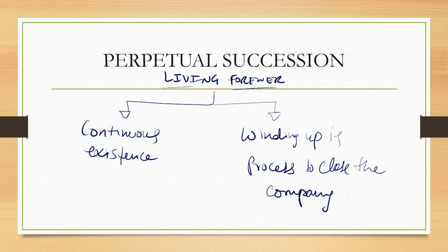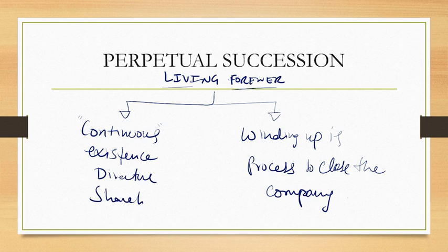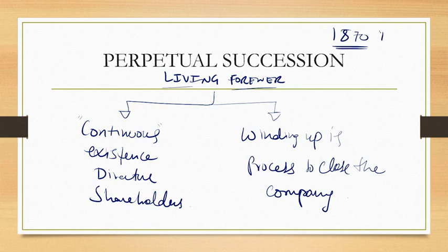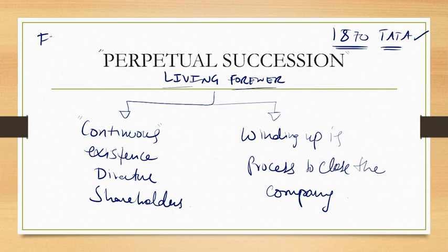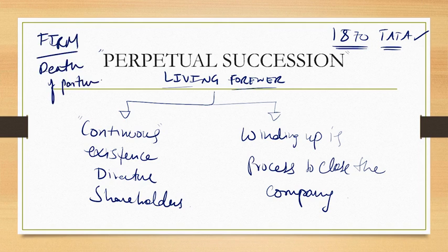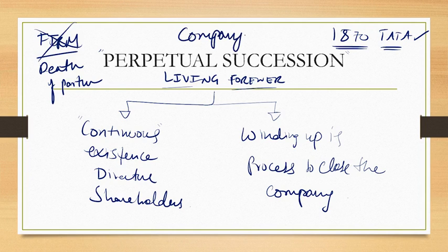The company is an artificial person, not a natural person. We will die but the company will never die — it will have perpetual succession, meaning continuous succession. Directors may die, shareholders may die, still the company will continue to exist. For example, Tata started around 1870 and the people who started it are not there now, but Tata company is still alive because of perpetual succession. In contrast, in a partnership firm, the death of a partner leads to dissolution of the firm.